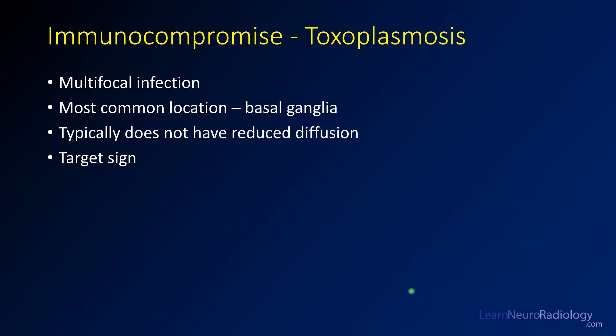Toxoplasmosis is a multifocal infection in the brain. Its most common location is the basal ganglia. Unlike abscess, it usually does not have reduced diffusion. You can have what's called the target sign, where you see a bullseye or a rim of enhancement with central hyperintensity.